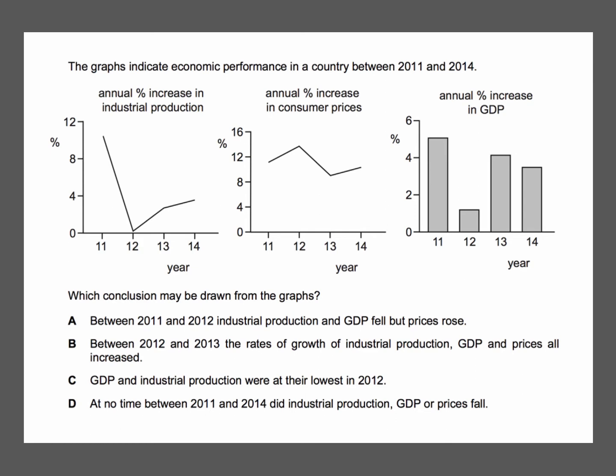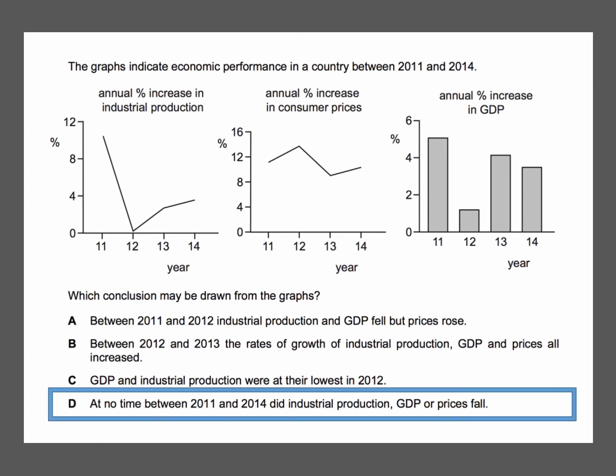Three charts showing industrial production, consumer prices, and GDP. What conclusion can be drawn from the data? The answer is D. At no time between 2011 and 2014 did industrial production, GDP, or prices fall.